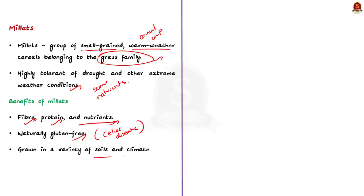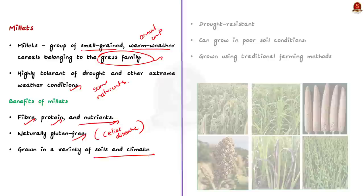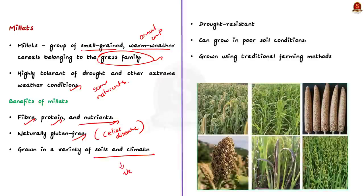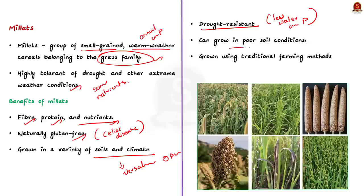Millets can be grown in a variety of soil and climate conditions, making them a versatile crop option for farmers. Millets are drought-resistant — they require less water and can grow in poorer soil conditions, making them a suitable food crop for areas with unpredictable weather patterns and water scarcity. Millets are often grown using traditional farming methods, making them more sustainable and environmentally friendly, and their cultivation could contribute to the achievement of many Sustainable Development Goals.